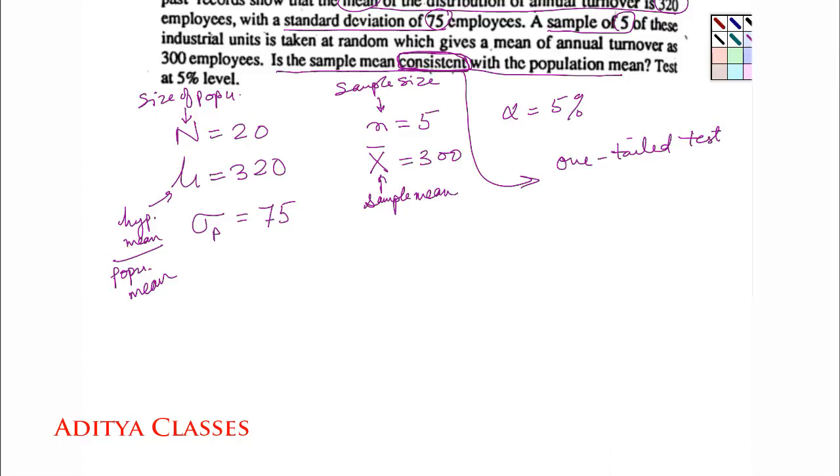Now, remember that little chart of ours. The chart suggested sample size, large and small. Large goes with z, small requires further analysis. Population variance known goes to z, population variance not known goes to t. Let me see what is my scenario.